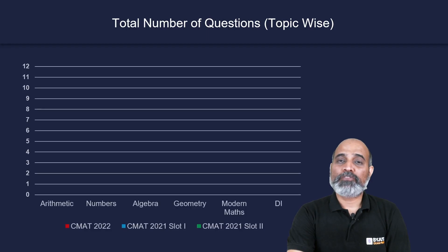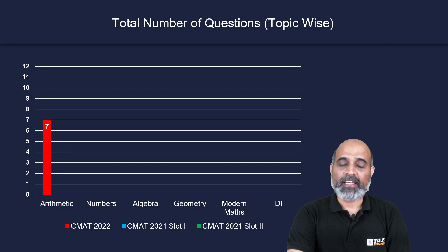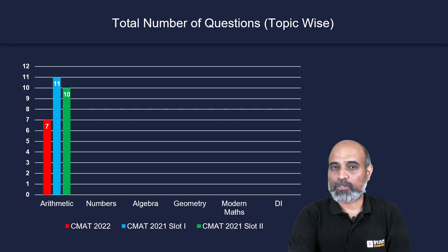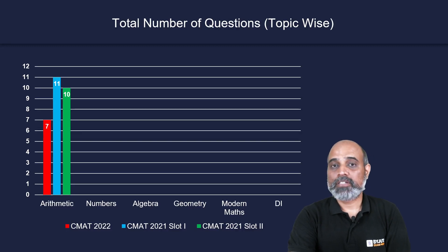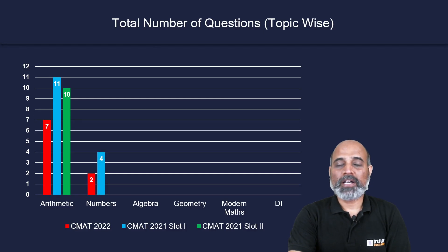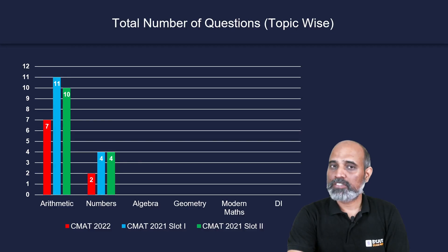Looking at the total number of questions topic-wise: in arithmetic, there were seven questions in CMAT 2022, 11 questions in CMAT 2021 slot one, and 10 questions in slot two. For numbers, there were only two questions in CMAT 2022, four questions in CMAT 2021 slot one, and an equal number in slot two.